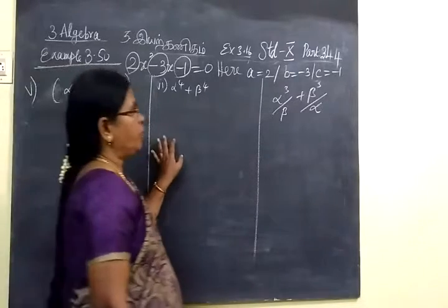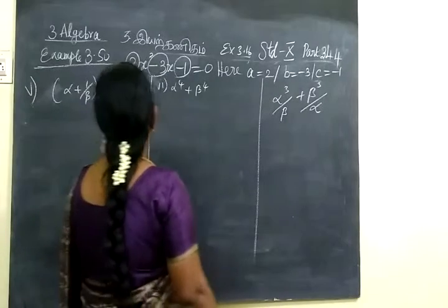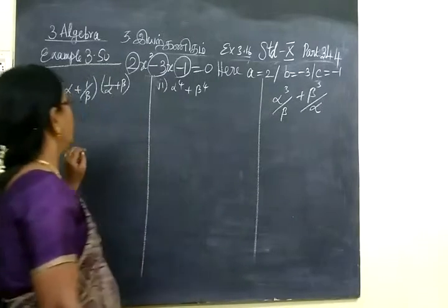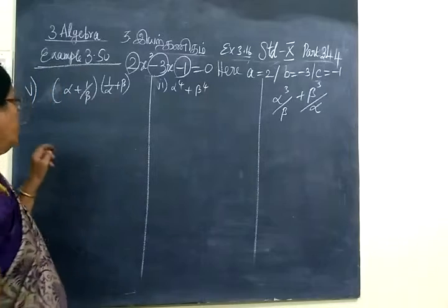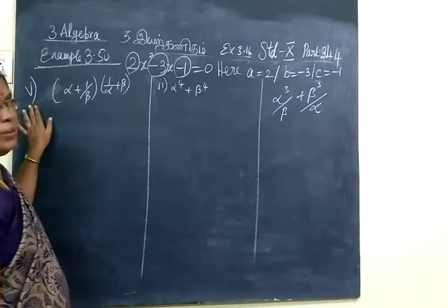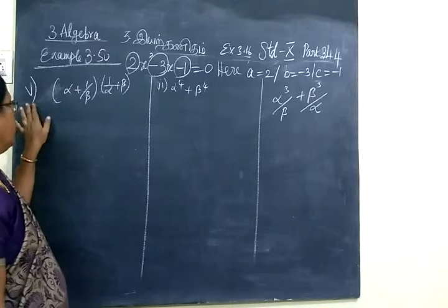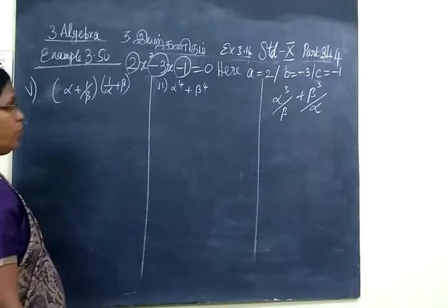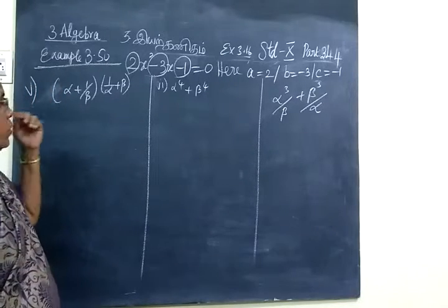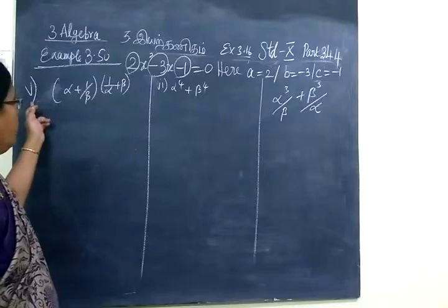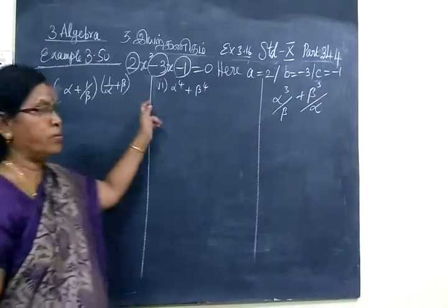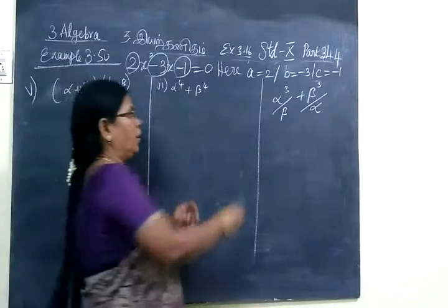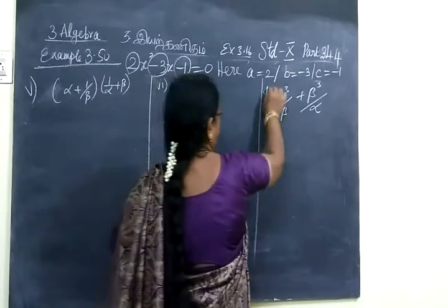Now we see Part 3, Example 3.50, continuation. In the last class we covered up to question 4. Now we see the 5th question, 6th question, and 7th question.